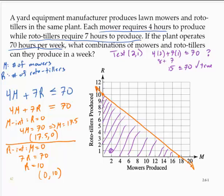Now, I've implied some other constraints in this problem. Notably, m must be greater than or equal to 0, and r must be greater than or equal to 0. We can't have a negative number of mowers or rototillers. So there are other implied constraints. Now, some of the other examples that we'll do will not have these implied constraints.